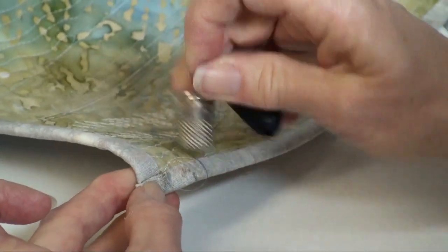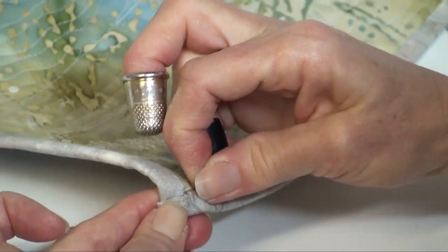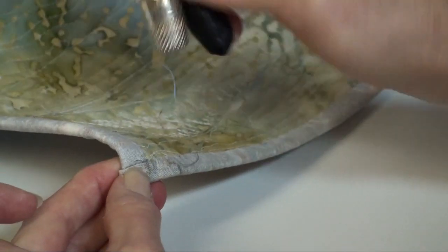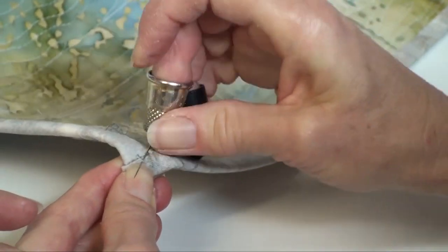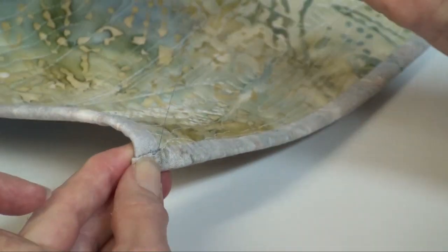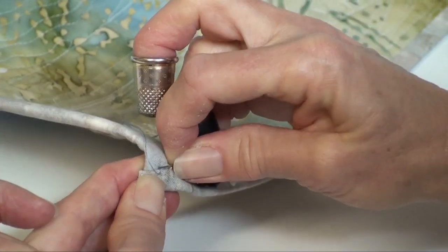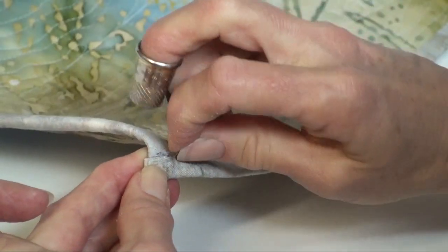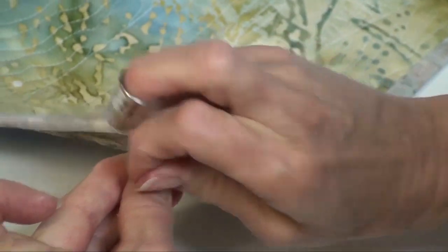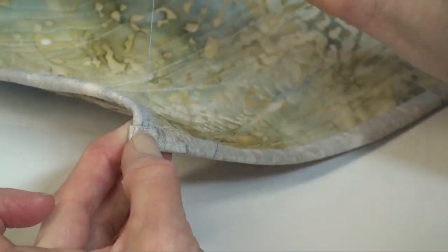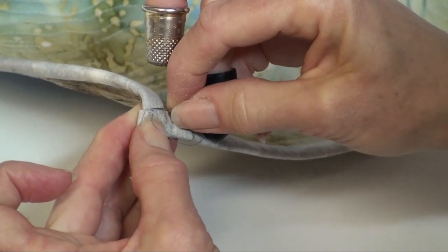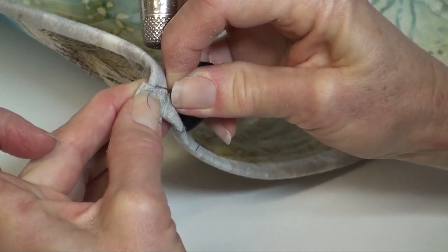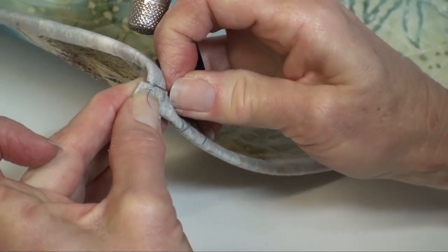And as I said before, the thread, you would use thread that would match your binding. And even if there are some stitches here that show, they are not going to show like this blue thread is. And just take a bite. And catch that front. And then at the end, I'm going to come in, not on the fold, not on the front, but just on the back.